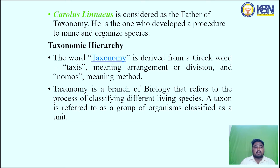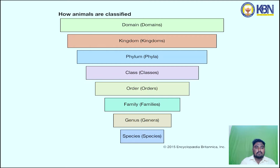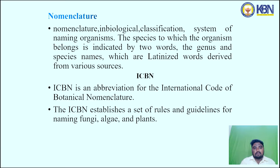The word taxonomy is derived from the Greek word 'taxis' meaning arrangement or division, and 'nomos' meaning method. Taxonomy is a branch of biology referring to the process of classifying different living species. A taxon is referred to as a group of organisms classified as a unit. The taxonomic hierarchy is: Domain, Kingdom, Phylum, Class, Order, Family, Genus, Species — with the shortcut mnemonic: DK PC OGS.